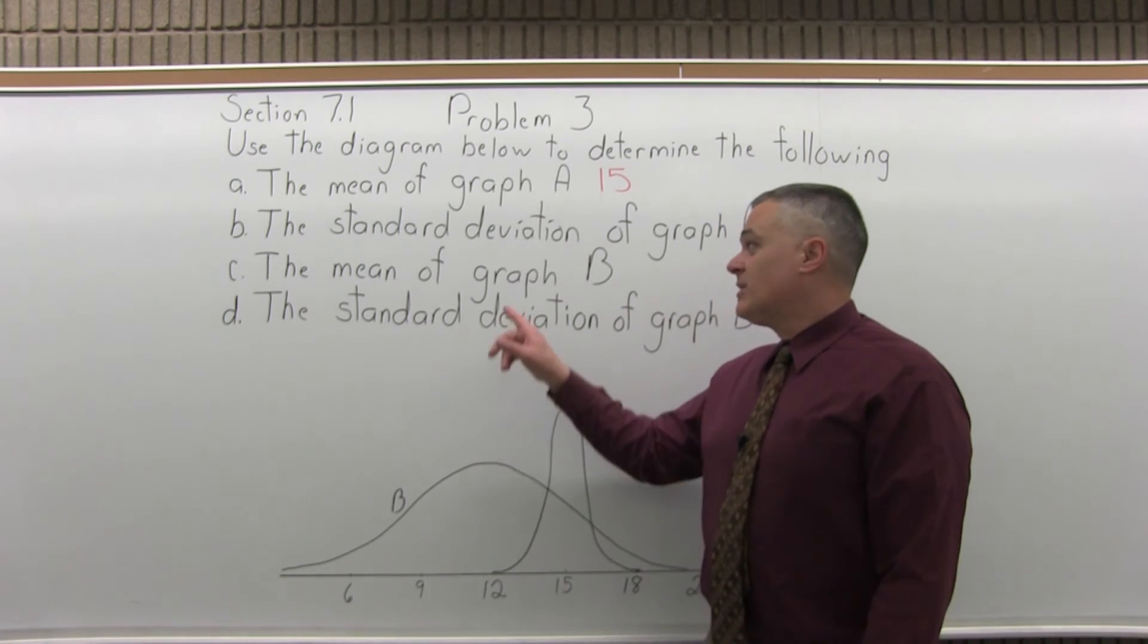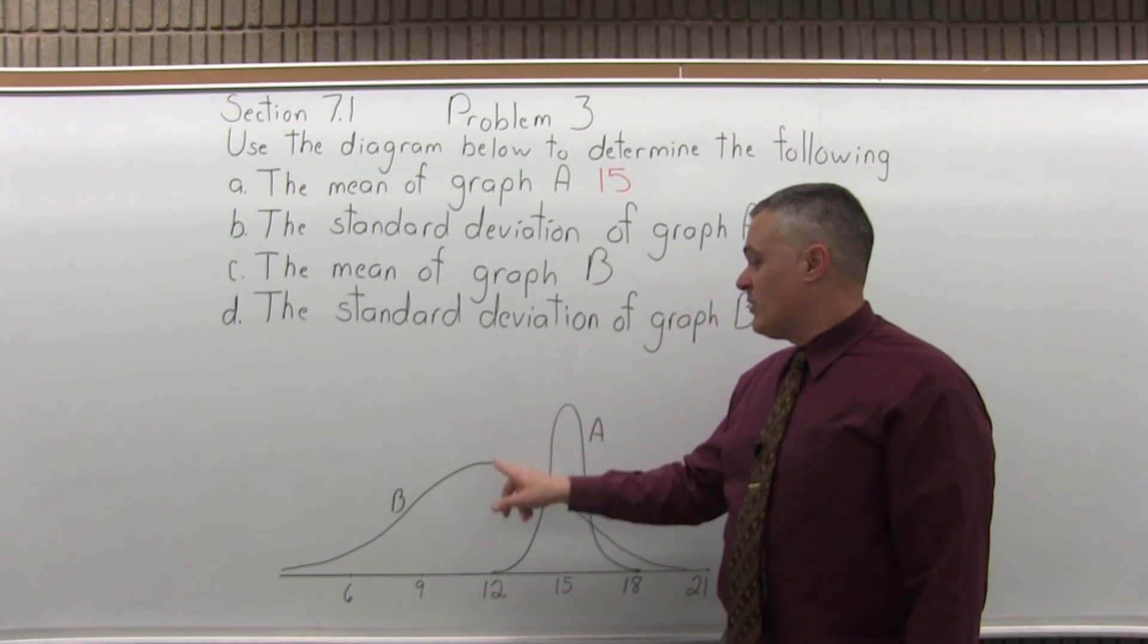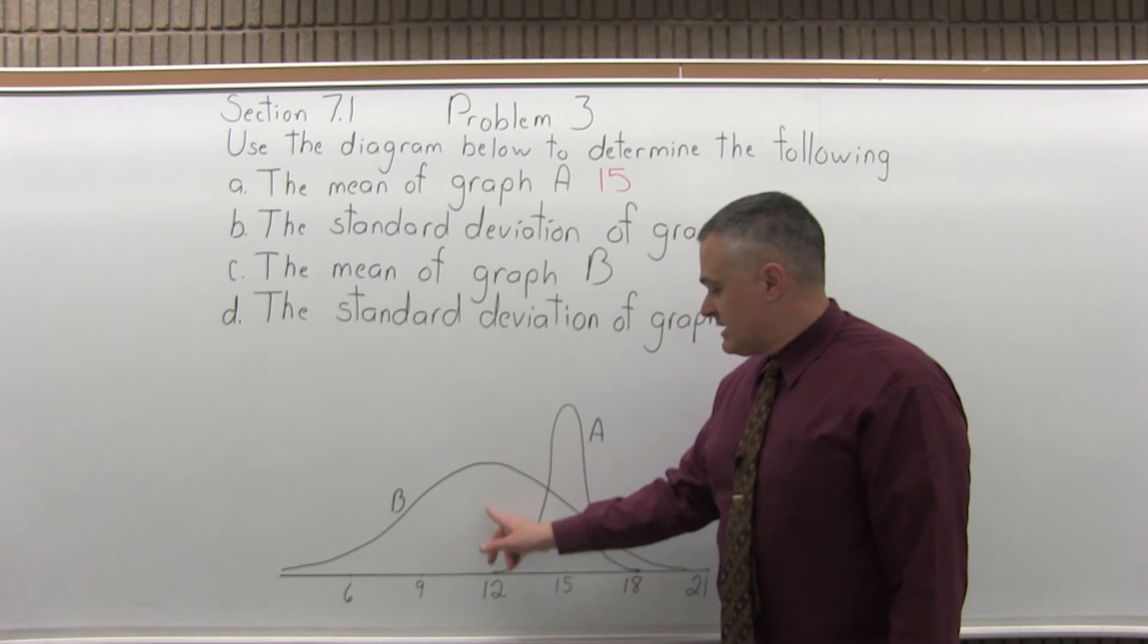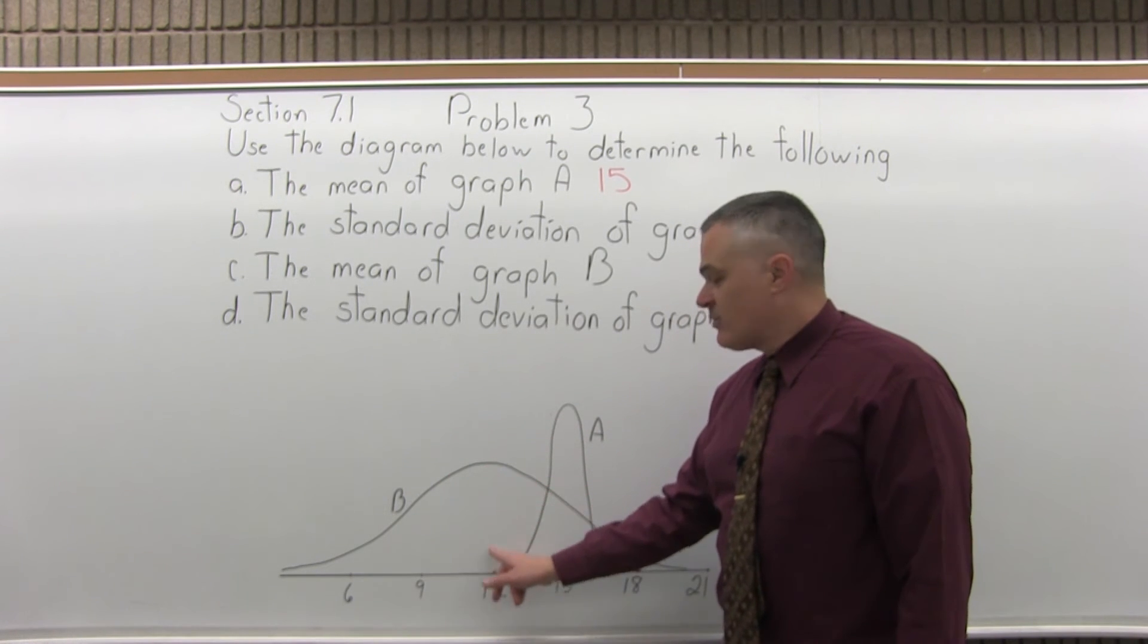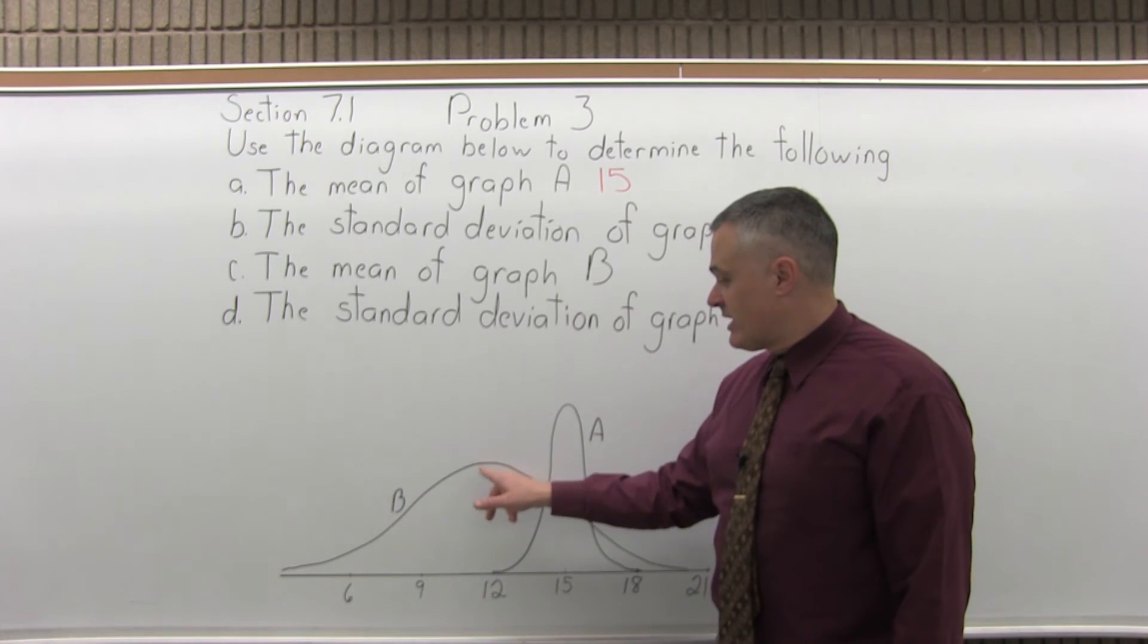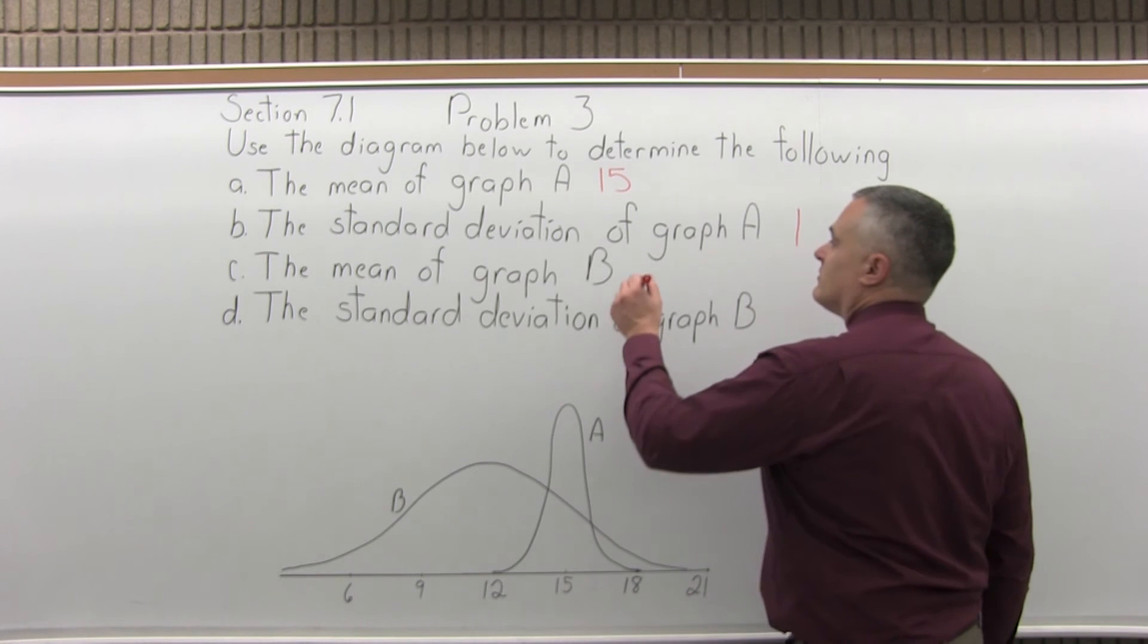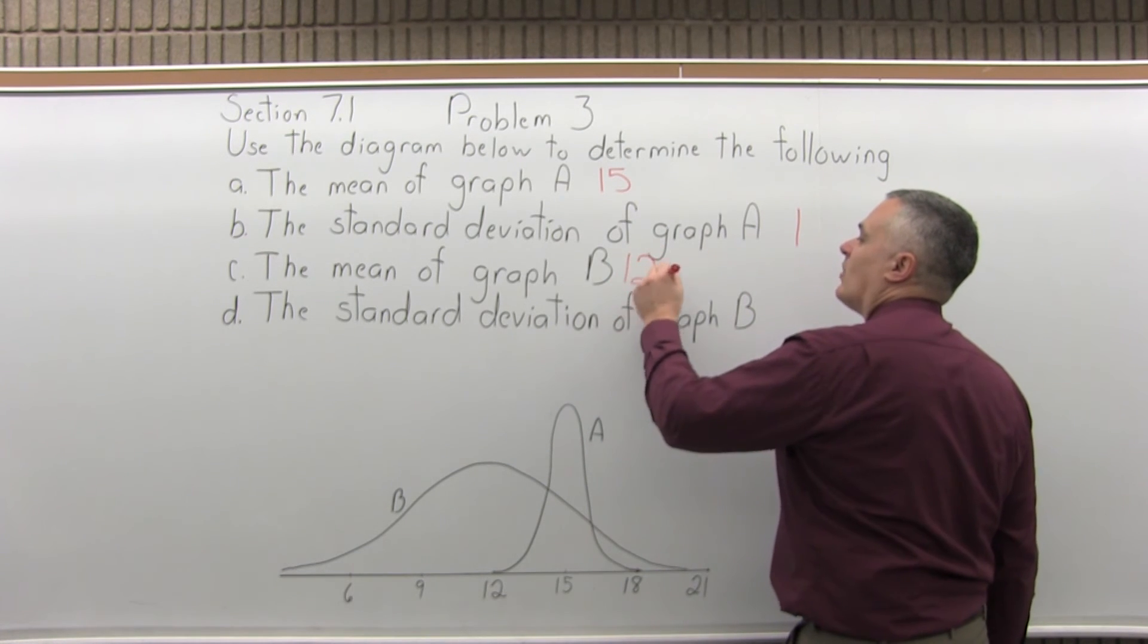Now graph B. Part C says, what's the mean of graph B? Well B is the lower, wider graph. Where is its center? It's centered in line with the 12. 12 is right under the highest middle part of the graph. So the mean of graph B is 12.